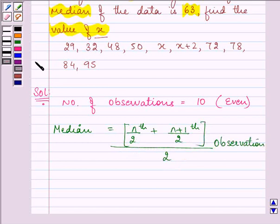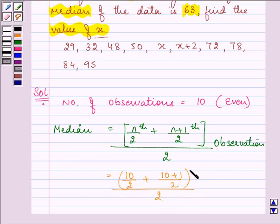Now let us substitute the value of n, which is 10. So we have the (10/2)th plus the (10/2 + 1)th observation, the whole divided by 2.